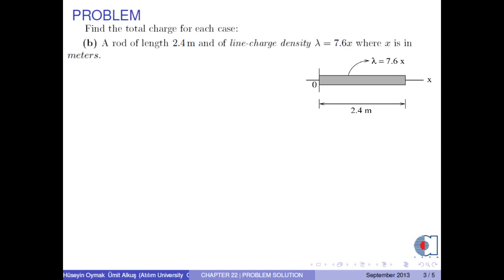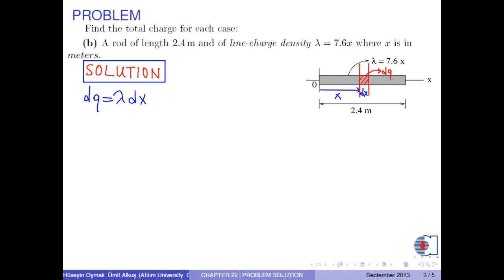Find the total charge for a rod of length 2.4 meters and of line charge density lambda equals 7.6x, where lambda is in nanocoulombs per meter and x is in meters. At position x, in the incremental line segment dx, we have the incremental charge dq equals lambda times dx.